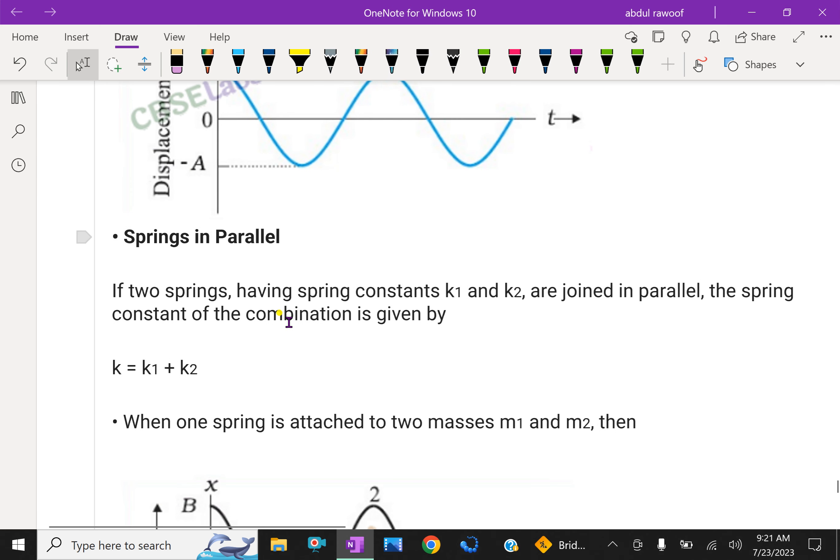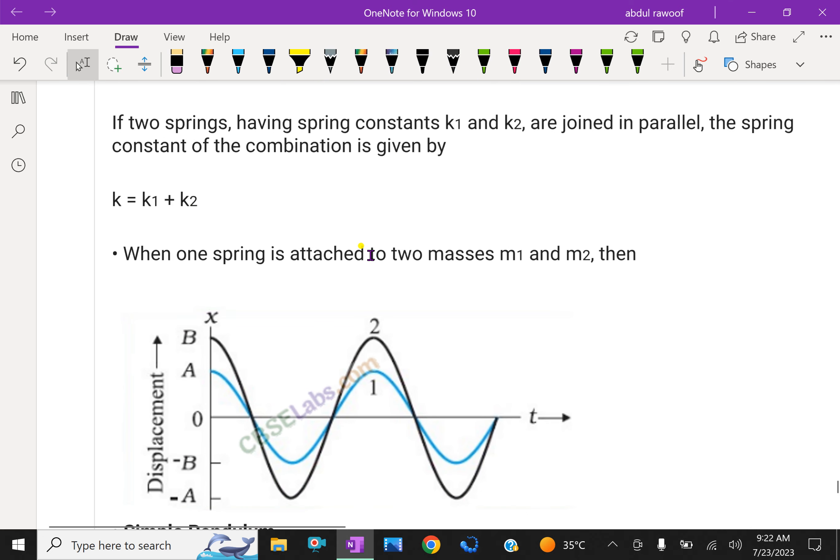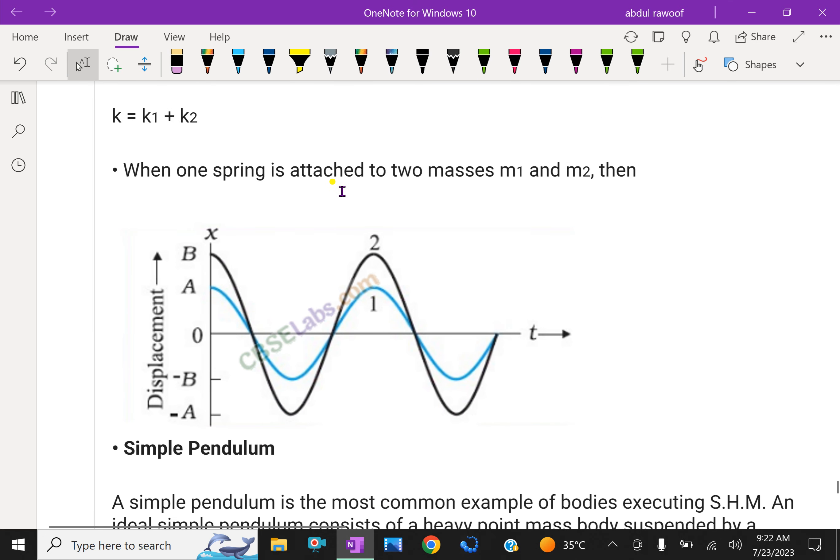Now in springs in parallel: if two springs having spring constant k1 and k2 are joined in parallel, the spring constant of the combination is given by k = k1 + k2. When one spring is attached to two masses M1 and M2, then considering together the mass is called M = M1 + M2, and apply the formula.